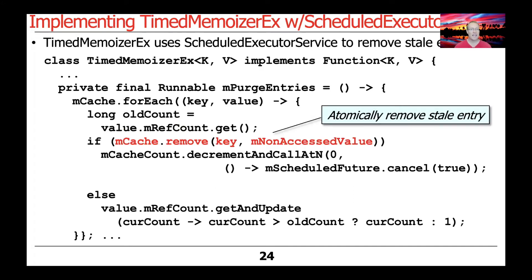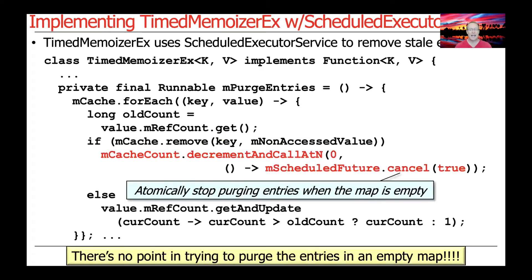We then try to remove the key — remove will only succeed if the key-value pair was not accessed during the time period. If it was not accessed, we call decrementAndCallAtN on the ThresholdCrosser. If this causes the count to go from one to zero, the map is now empty and we cancel the scheduled future — stop running, you're done. There's no sense in trying to purge entries in an empty map; that would just waste CPU cycles.